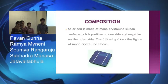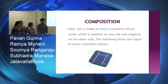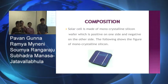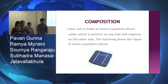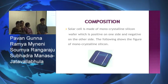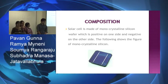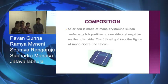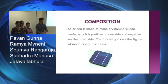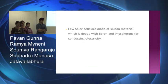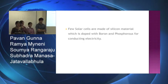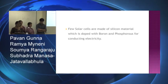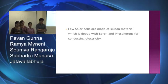Here shows the positive and negative ends of the solar panel. This helps in capturing the electrons in the form of electric current. The solar cells are made of monocrystalline silicon wafer which has positive and negative ends. Some solar cells are made of silicon material which is doped with boron and phosphorous for conducting electricity.